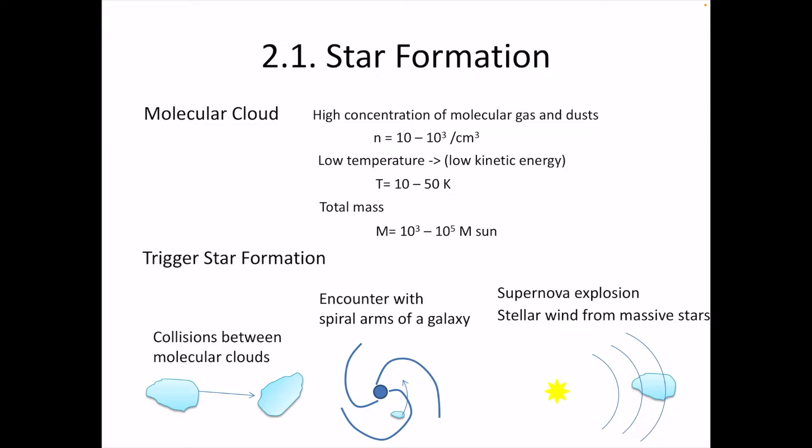Low temperature indicates low kinetic energy. The total mass of the molecular cloud is 1,000 to 100,000 solar masses. Stars are forming inside of this molecular cloud. To form a star, there are several possibilities to trigger star formation. The first scenario is that a molecular cloud might collide with another molecular cloud. The collision site between the two molecular clouds produces high density areas. High density means higher gravitational force, which sets star formation in such regions.